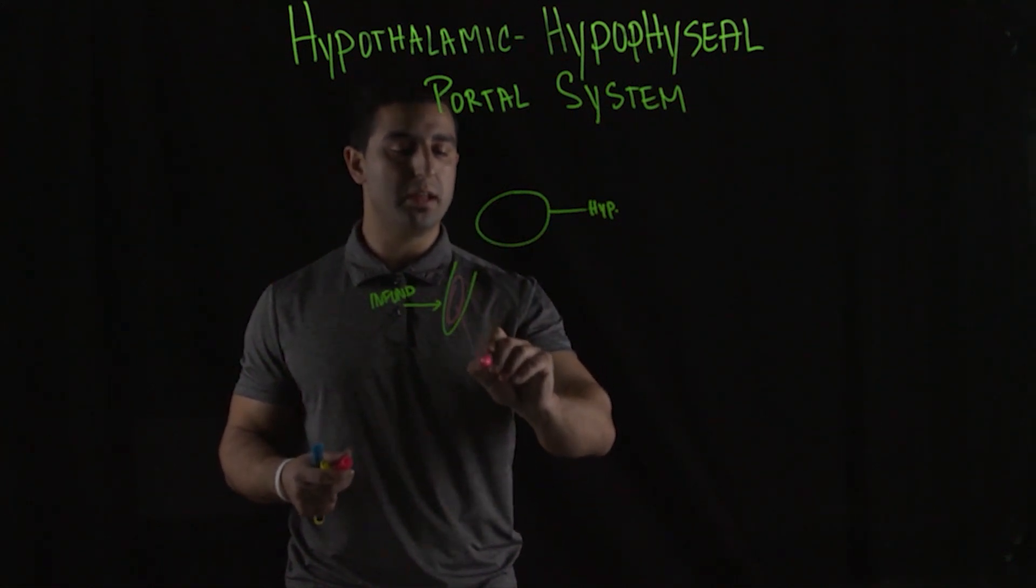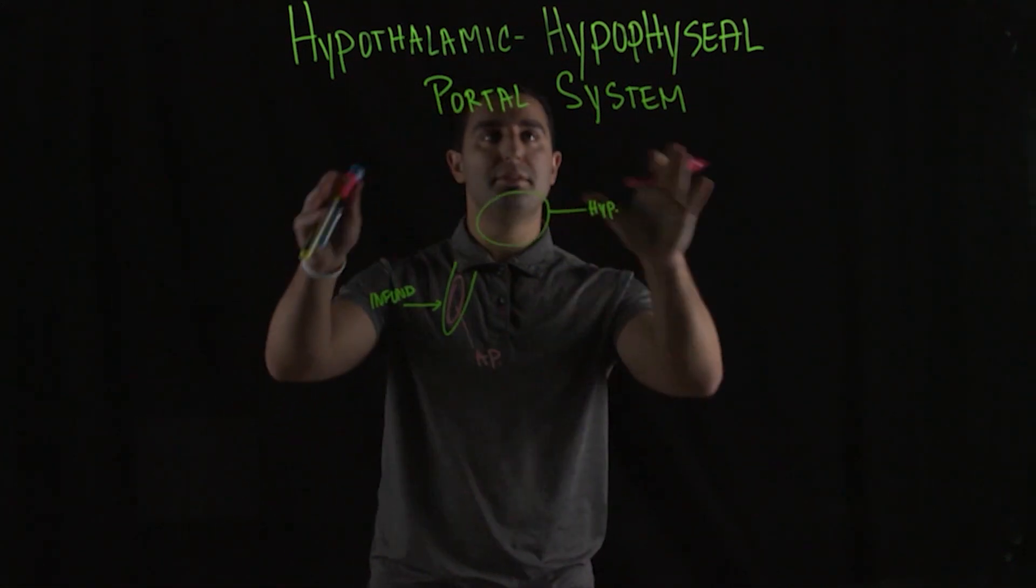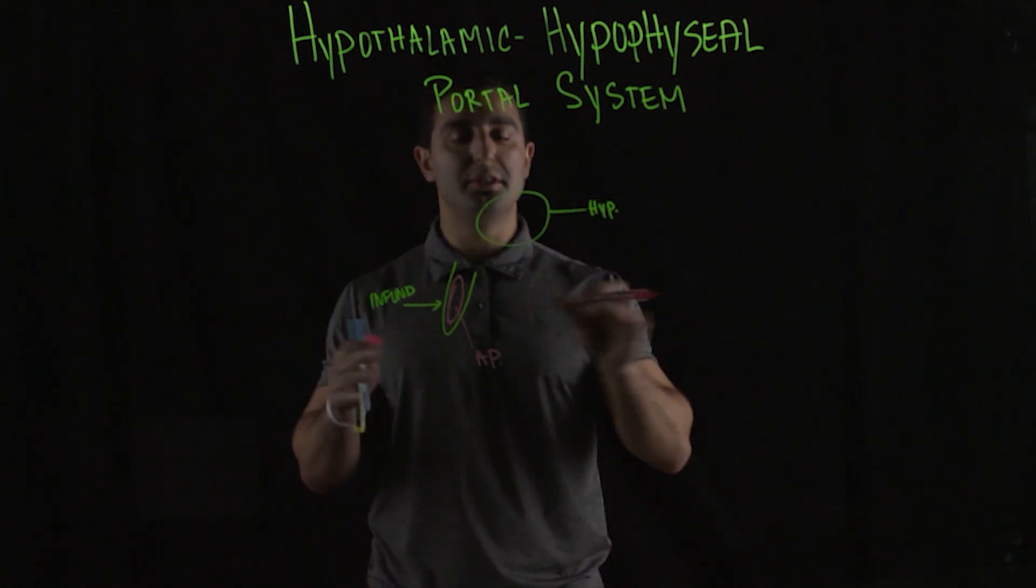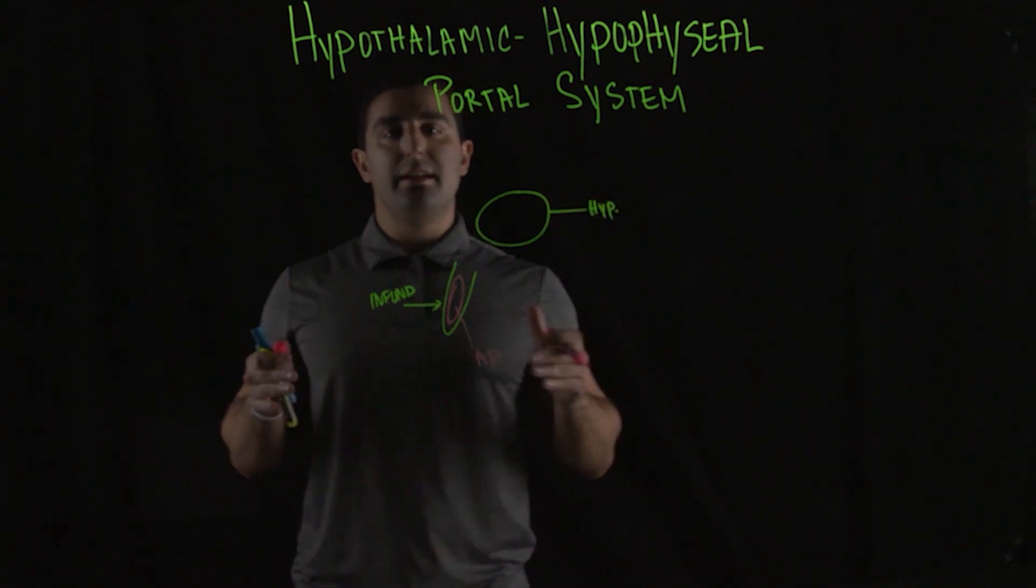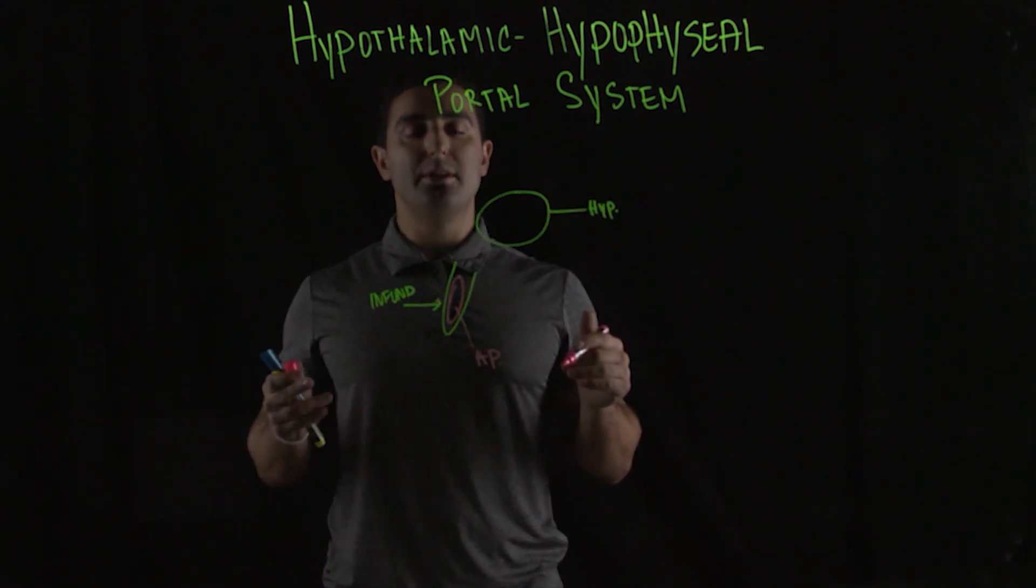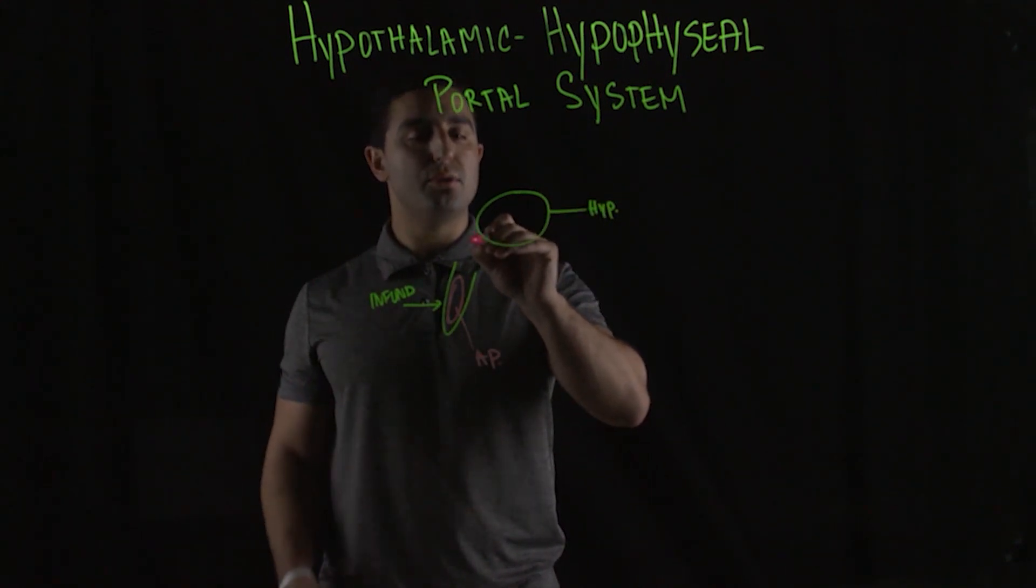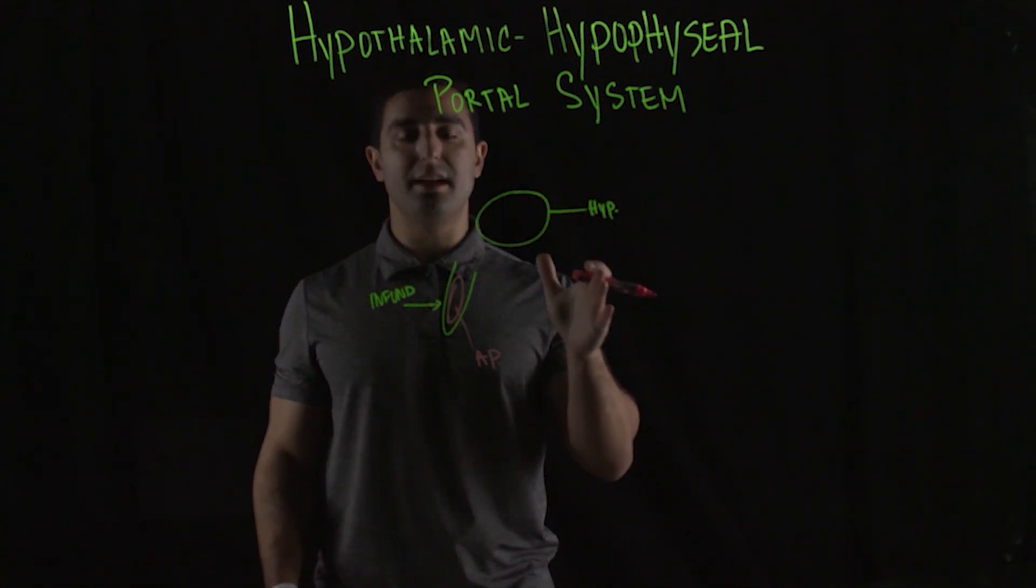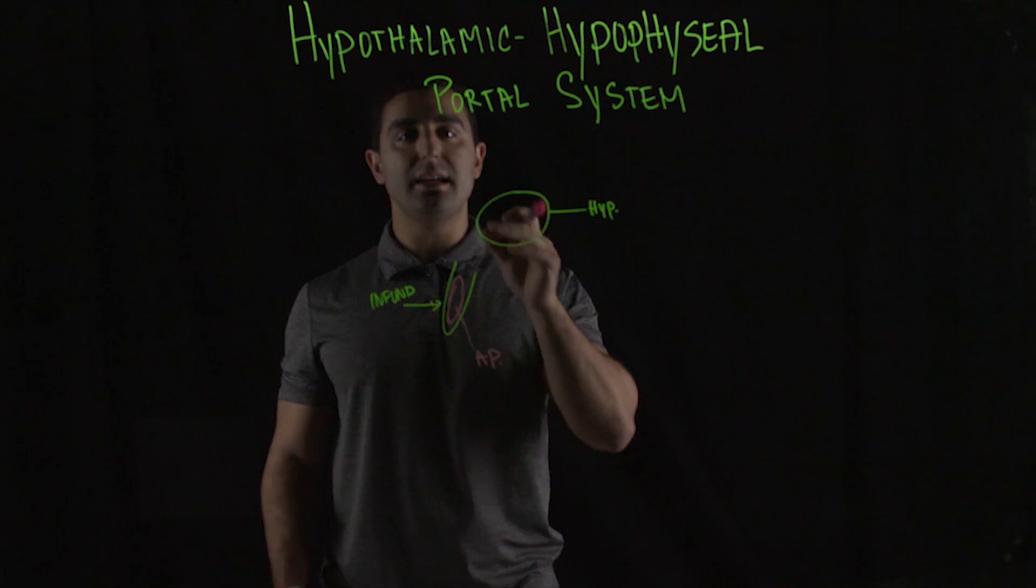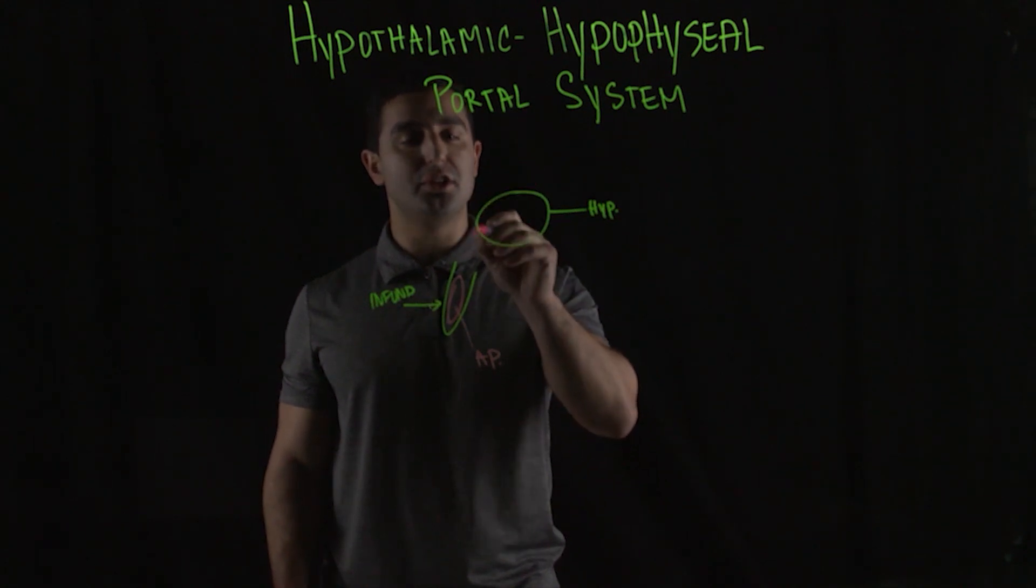Here we're going to focus on the anterior pituitary because the hypothalamic hypophyseal portal system is relative to this. This is a capillary network, a fenestrated capillary network that allows for the transfer of hormones that are secreted by the hypothalamus to maintain its high concentration when it enters the anterior pituitary.